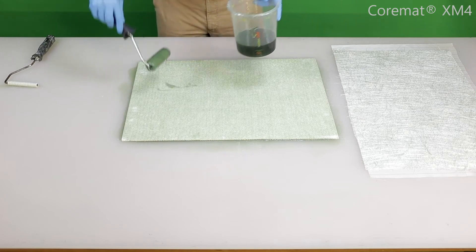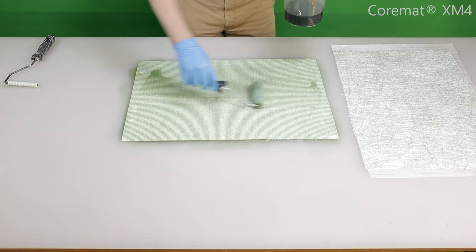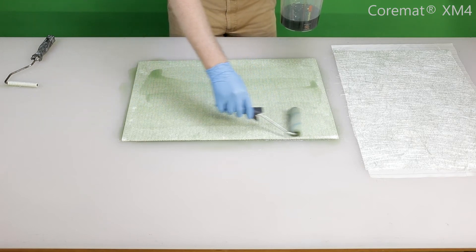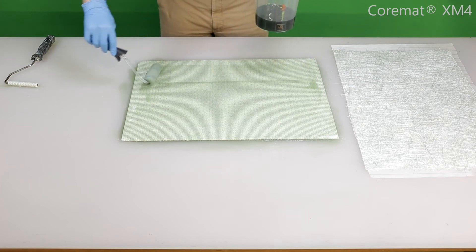We do not have to measure the amount of resin we use because it's not possible to overfill the Cormat. The structure of the fibers and microspheres are chemically bonded to each other, so it will not expand when resin is added.